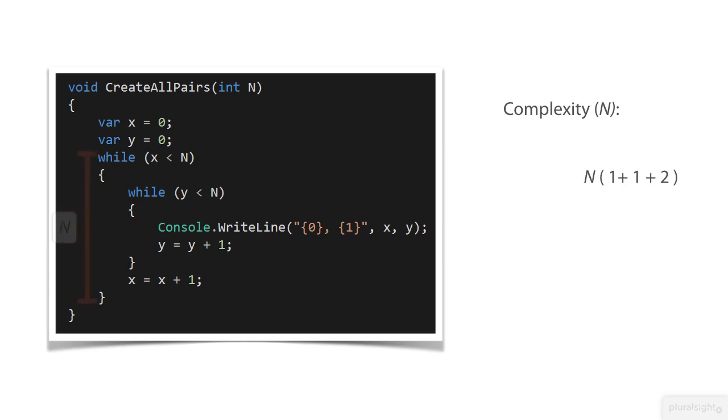Also notice that the outer loop is actually similar to the inner loop and thus we also have an expression for the complexity of that. Only difference is that instead of calling console.writeline, we execute the inner loop. Last we have a couple of initializations.